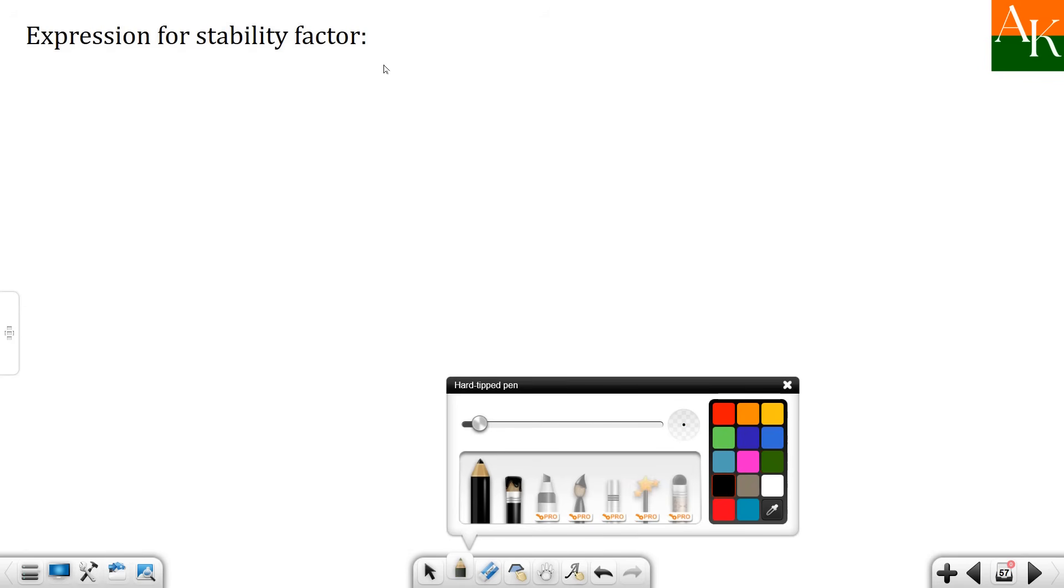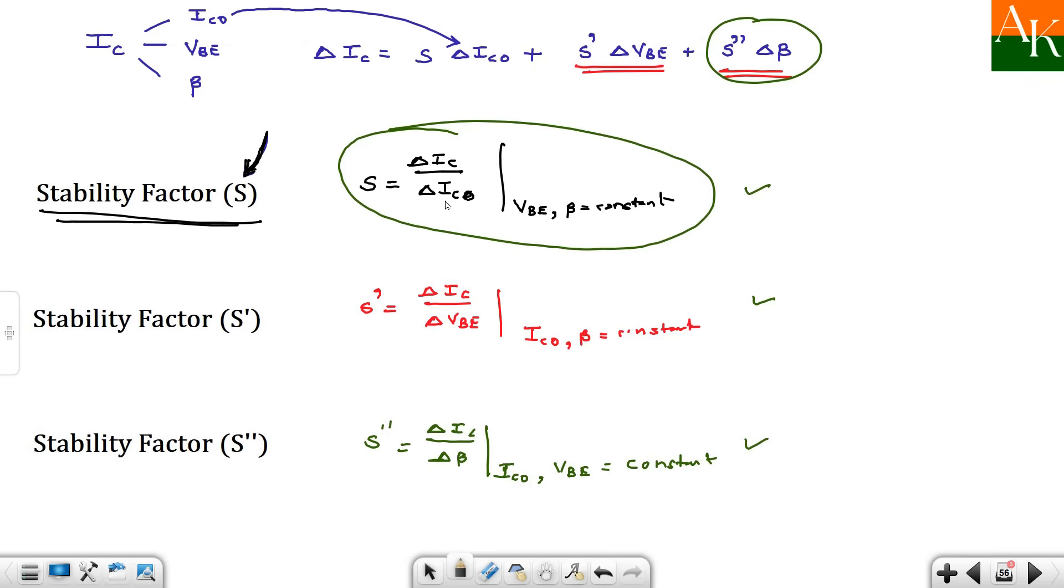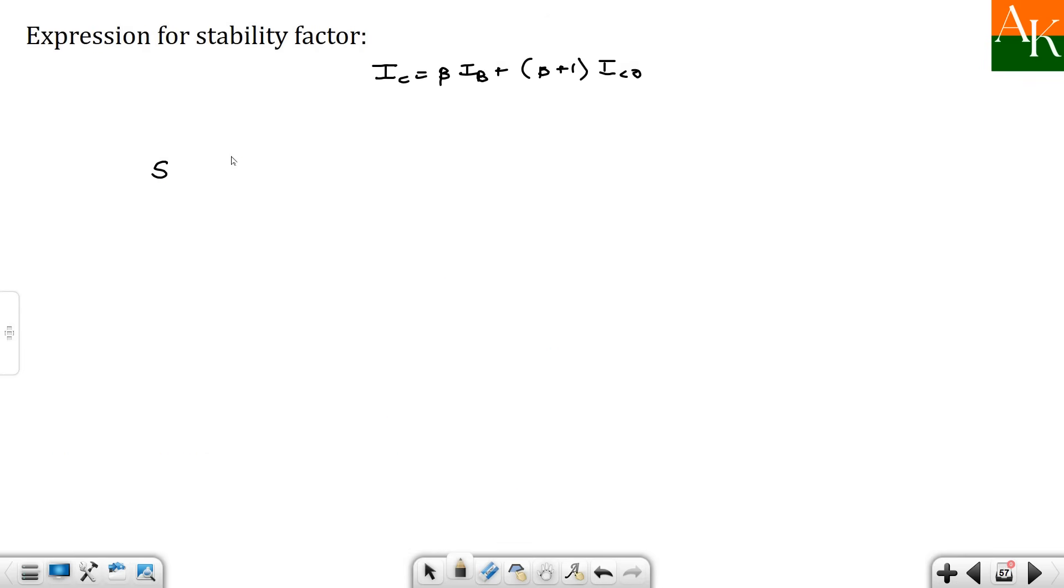So yeh S ka formula hai, delta IC divided by delta ICO for constant value of VBE and beta. So iske liye expression derive kar dete hain S ke liye. So IC ka kya expression hai? IC is nothing but beta times IB plus beta plus 1 ICO. S calculate karne ke liye kya formula hai - delta IC by delta ICO.